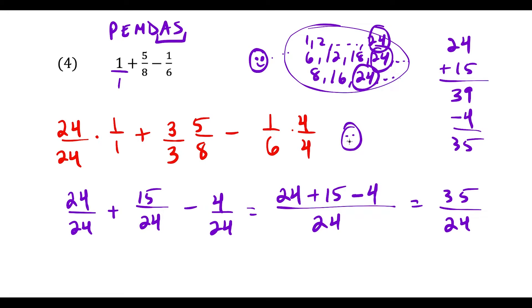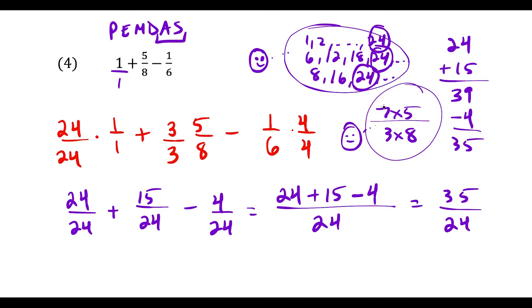Now to check if 35/24 simplifies further: 35 is 7 times 5, and 24 is 3 times 8 — no common factors. So this is our simplified answer: 35/24.